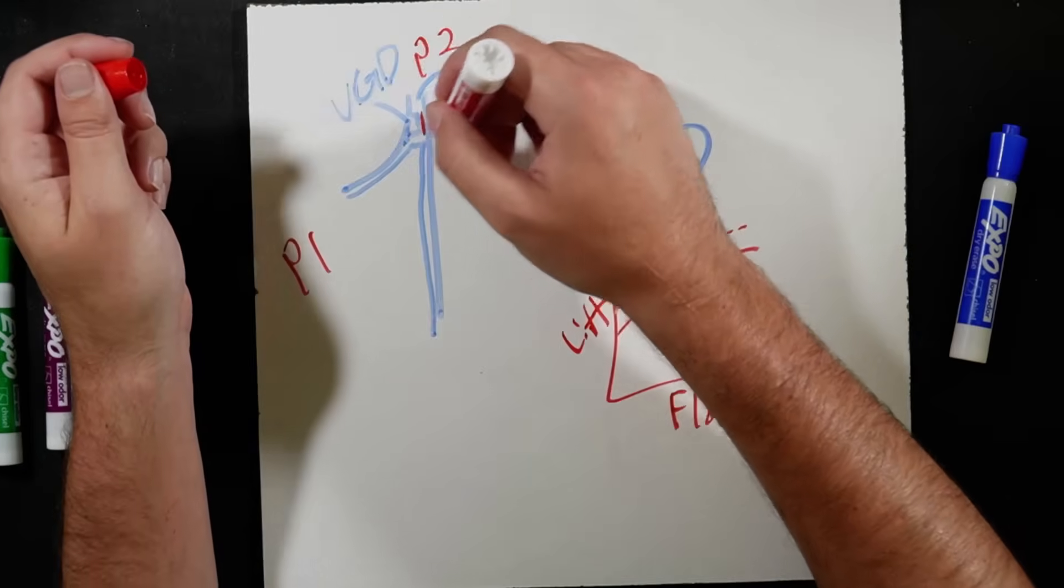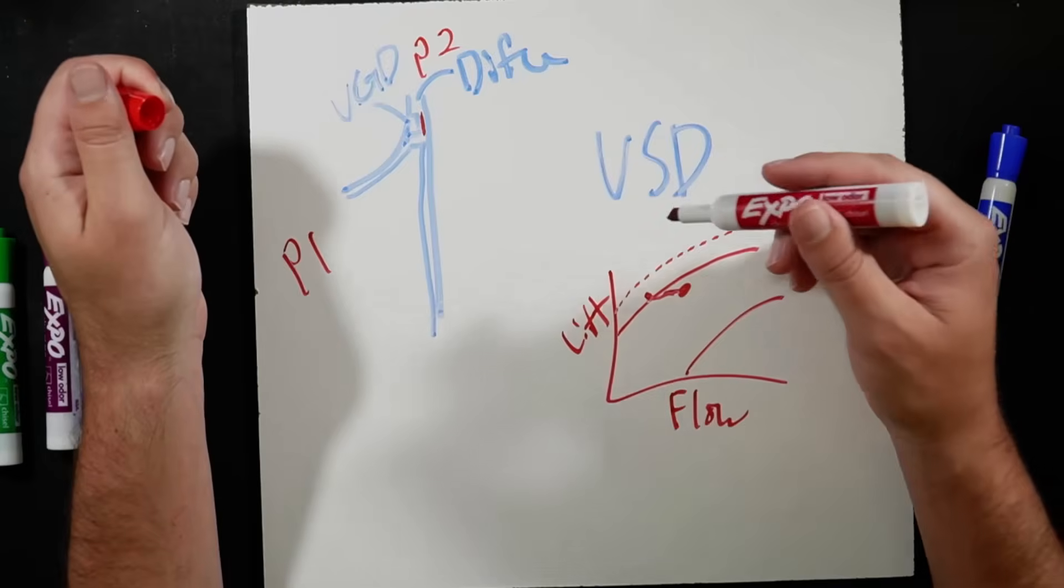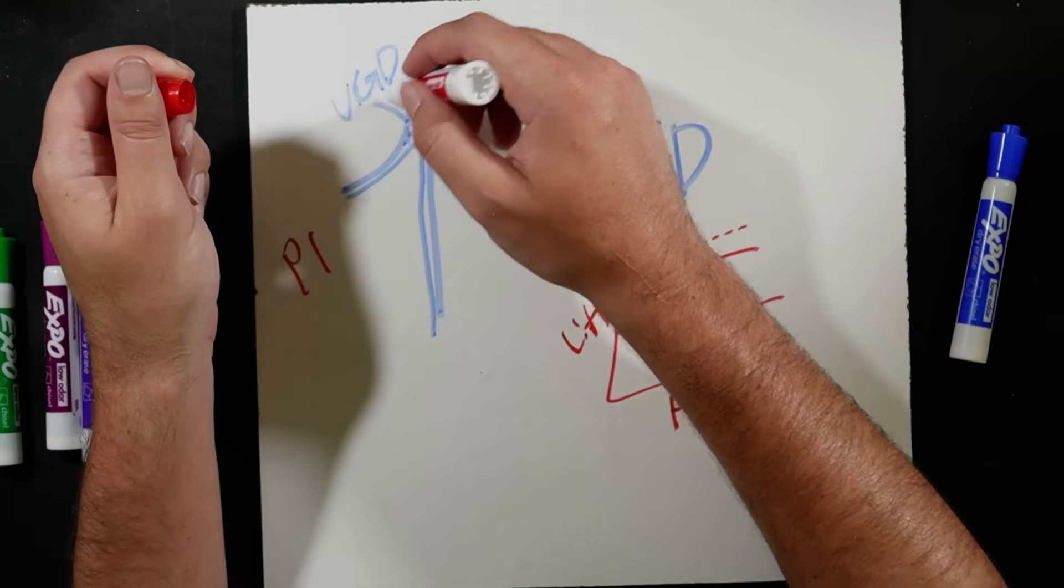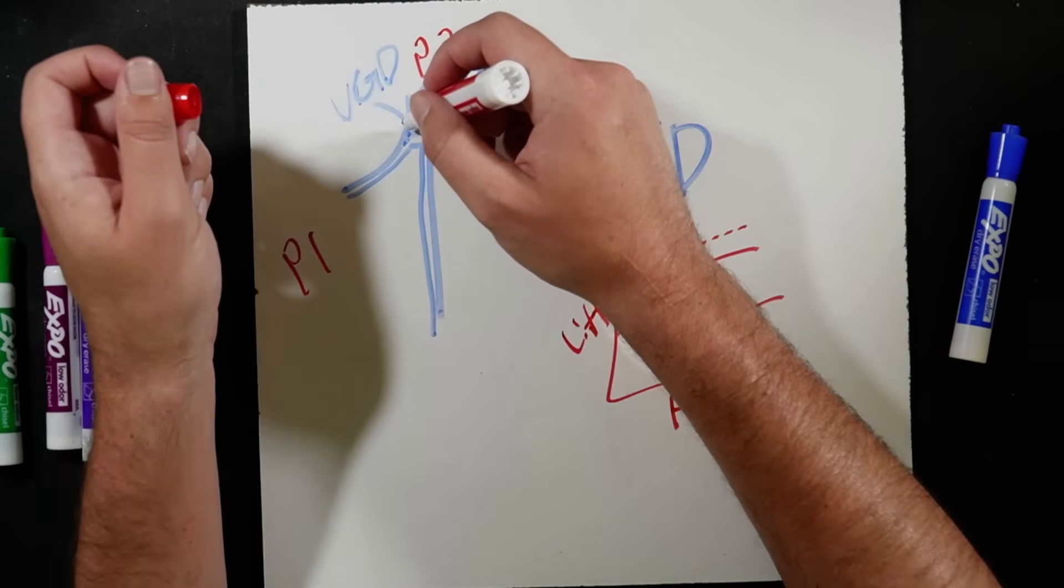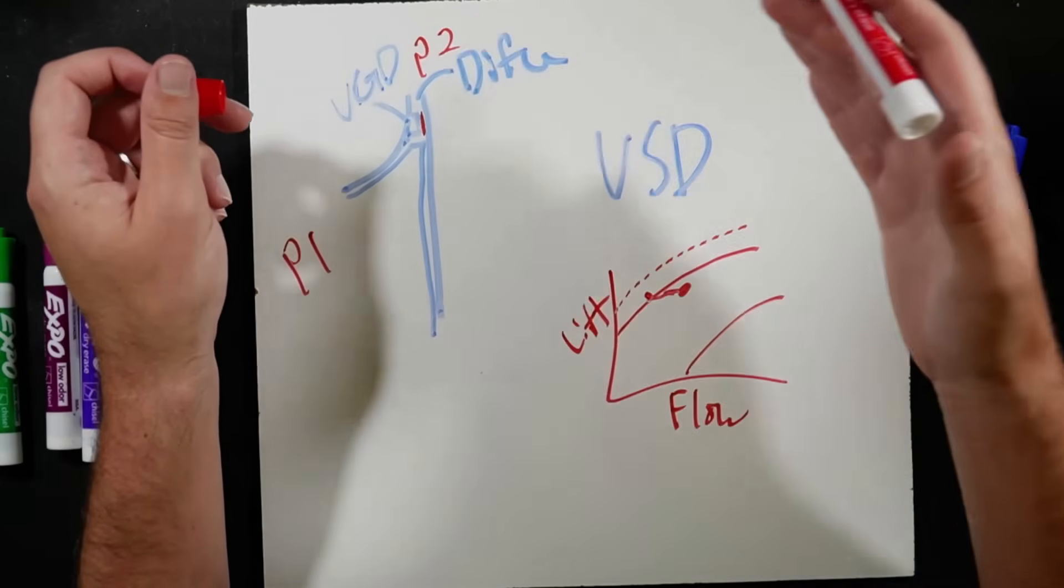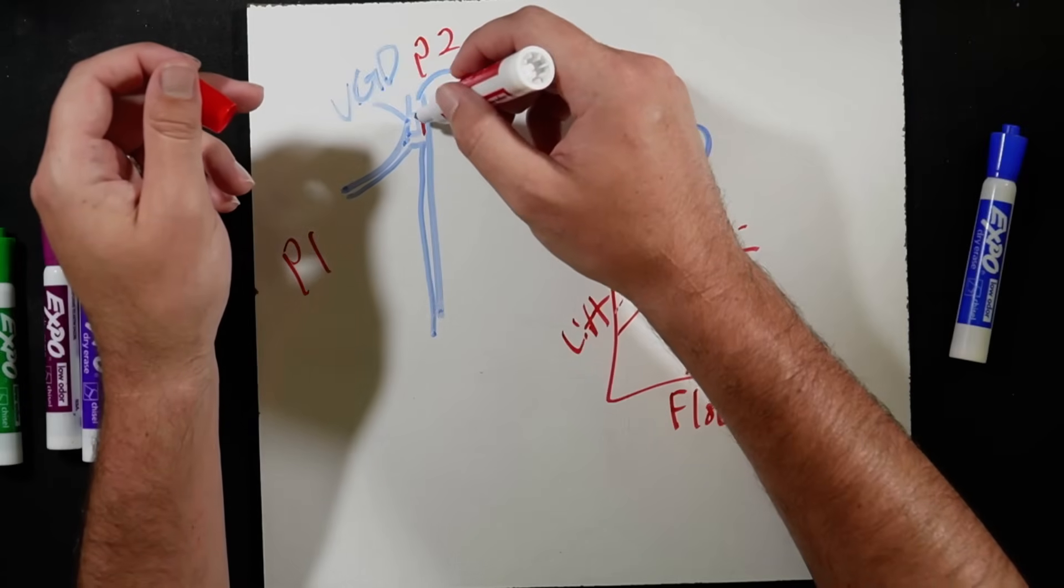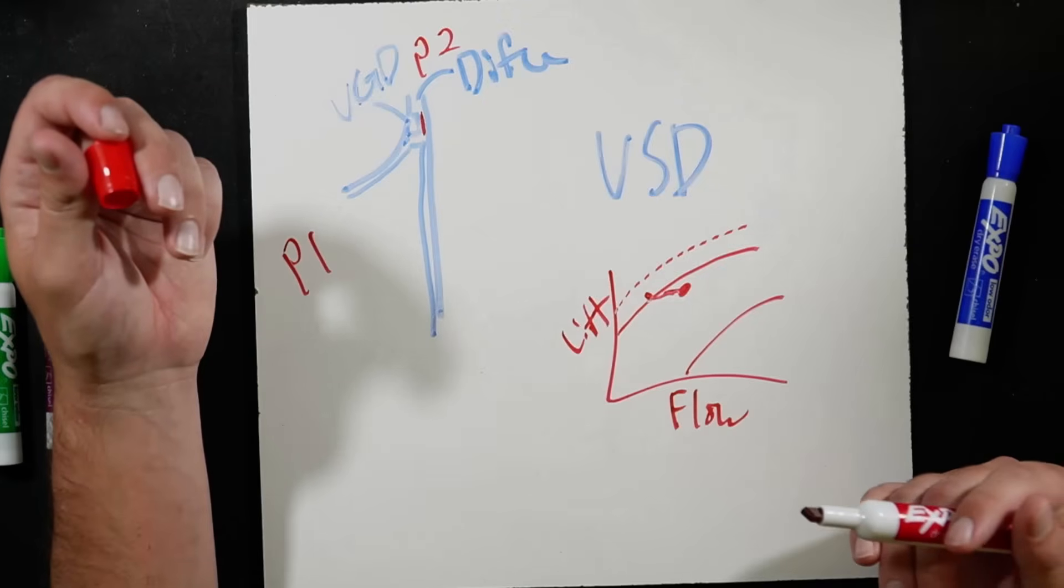And that is why some of these chillers do not have an inlet guide vane, an IGV. They only have a VGD with a drive. And part of that VGD process is as that chiller is unloading, we push the VGD to a closed position, which narrows our diffuser gap, reducing how much flow goes through there.